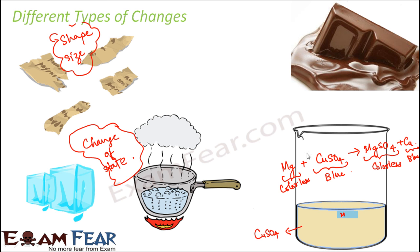Please do not worry about the chemical equations — I am just trying to show you how changes happen. In many changes, chemical reactions take place, forming new substances, which is why we observe a difference in appearance, shape, size, or state. Whenever there is a change, one of these parameters — shape, size, colour, texture, or state — must have undergone a change.